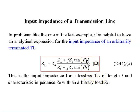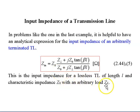L will be given to you, as will the characteristic impedance Z0. Usually Z0 is 50 ohms unless stated otherwise. The load impedance ZL will also be given.